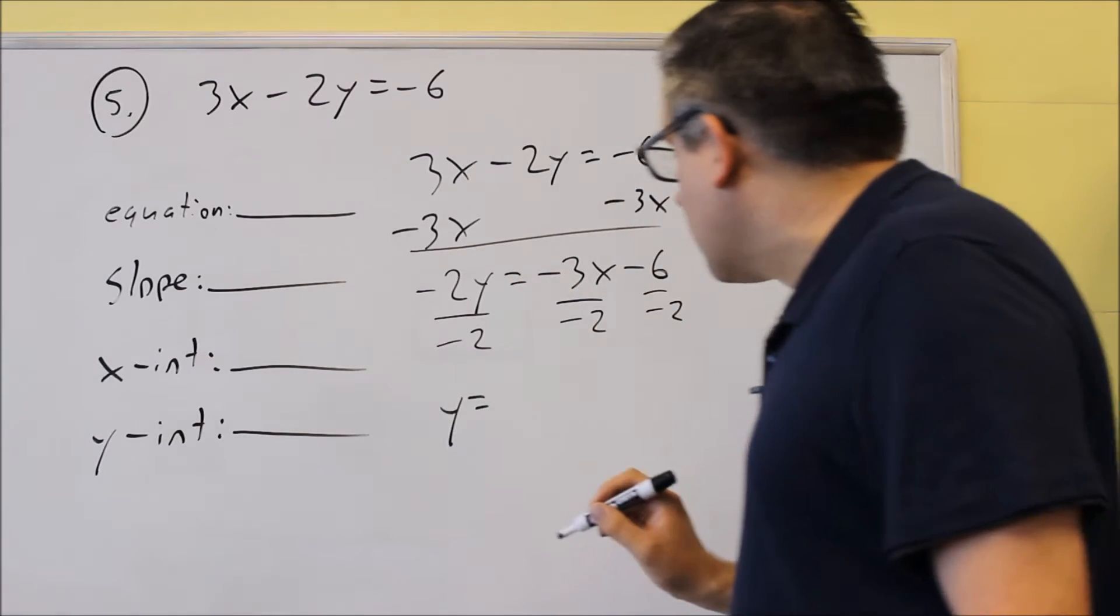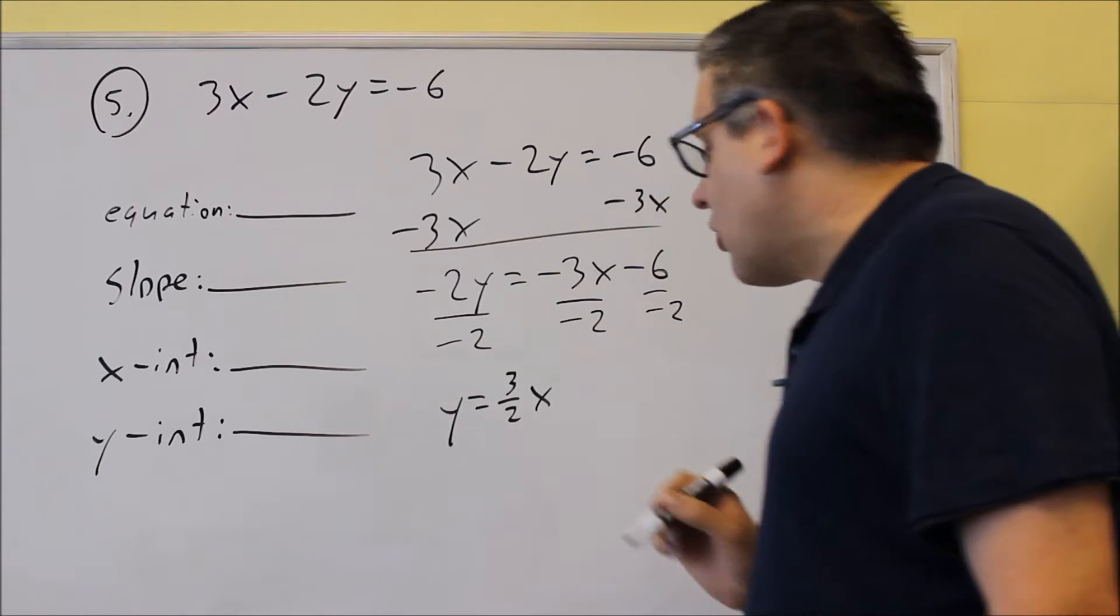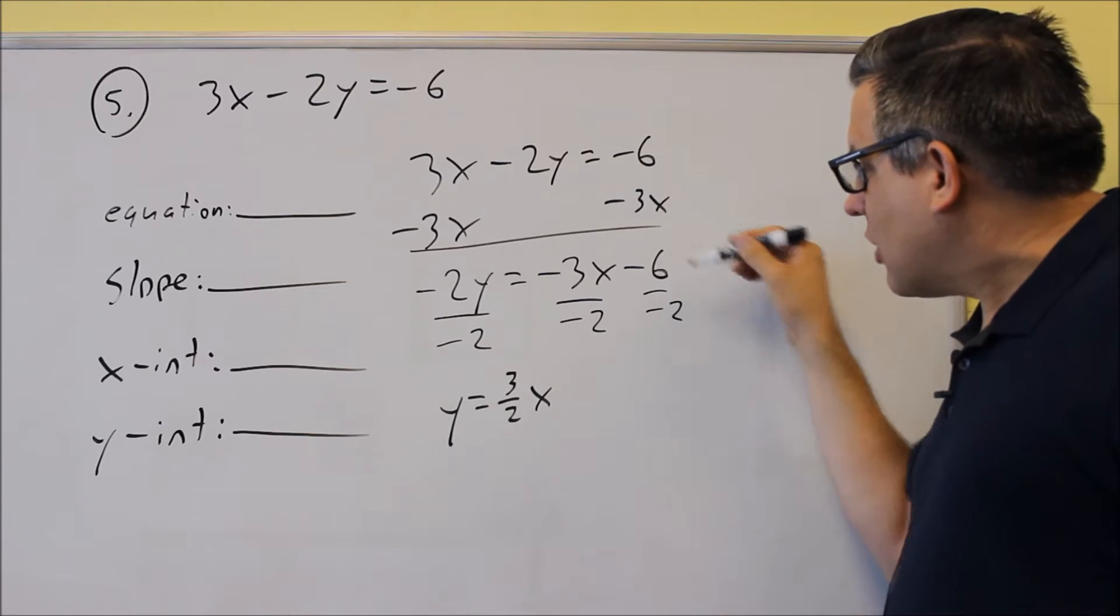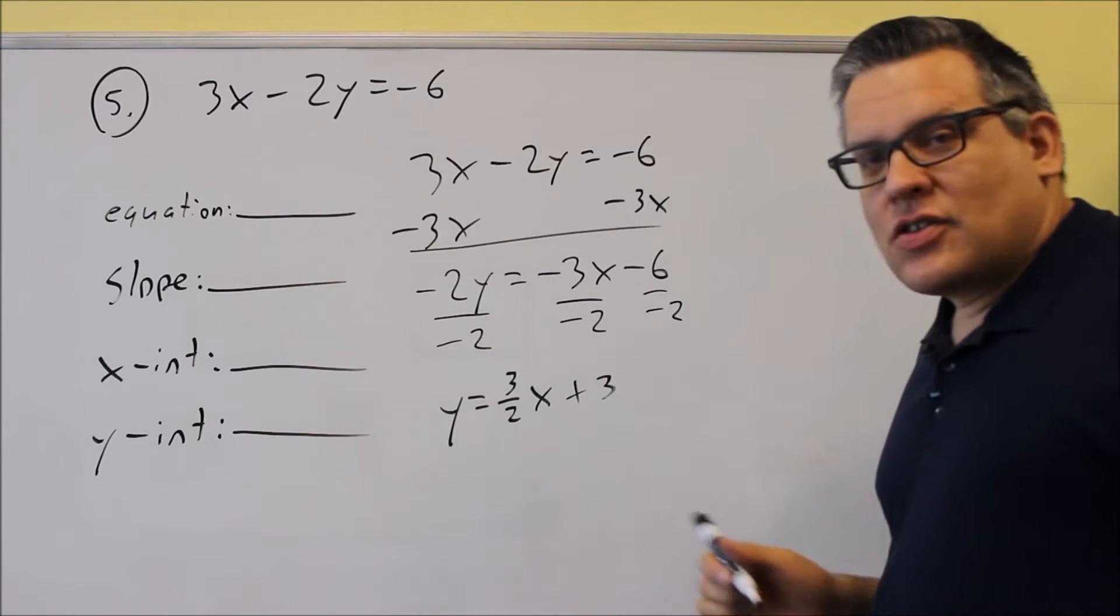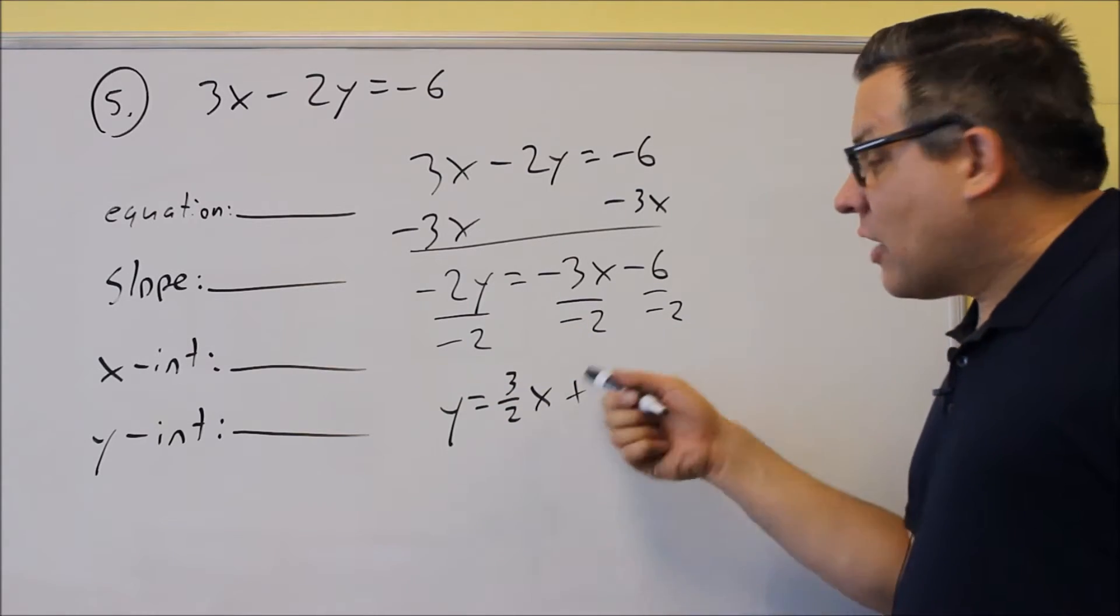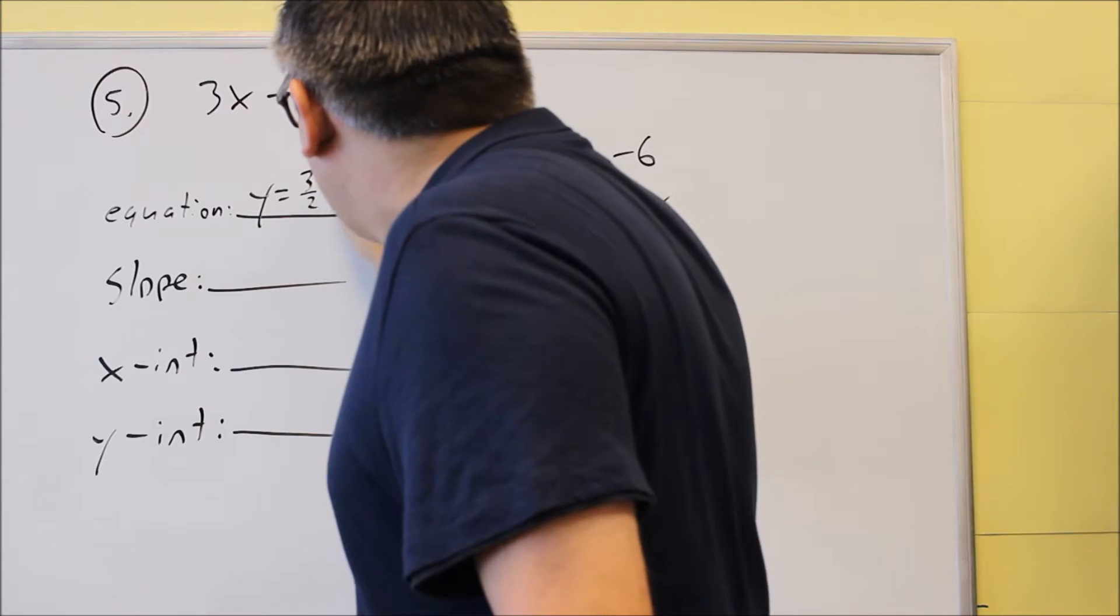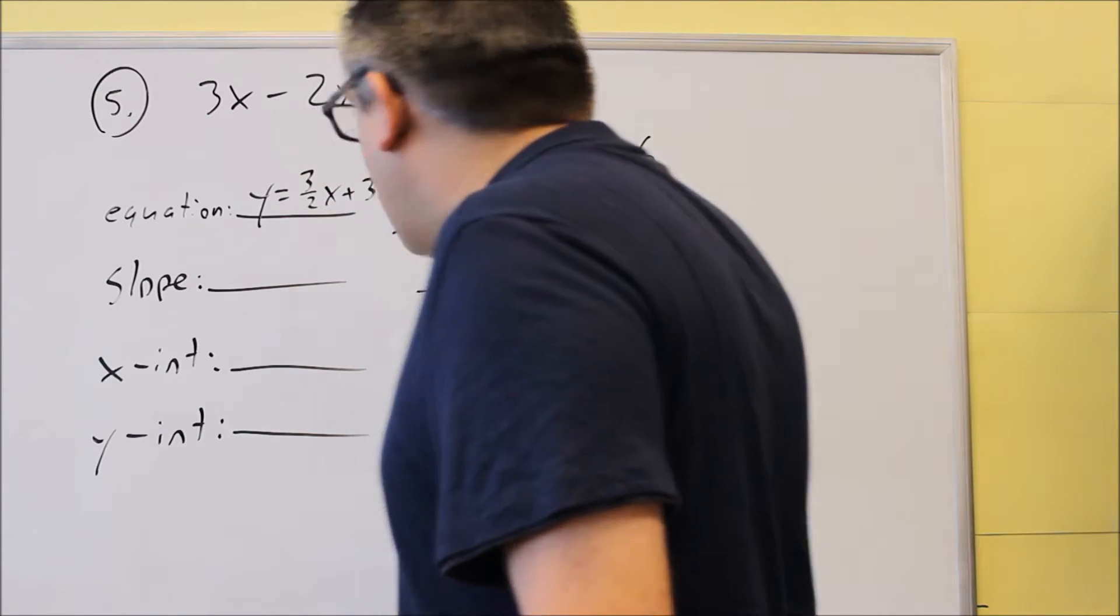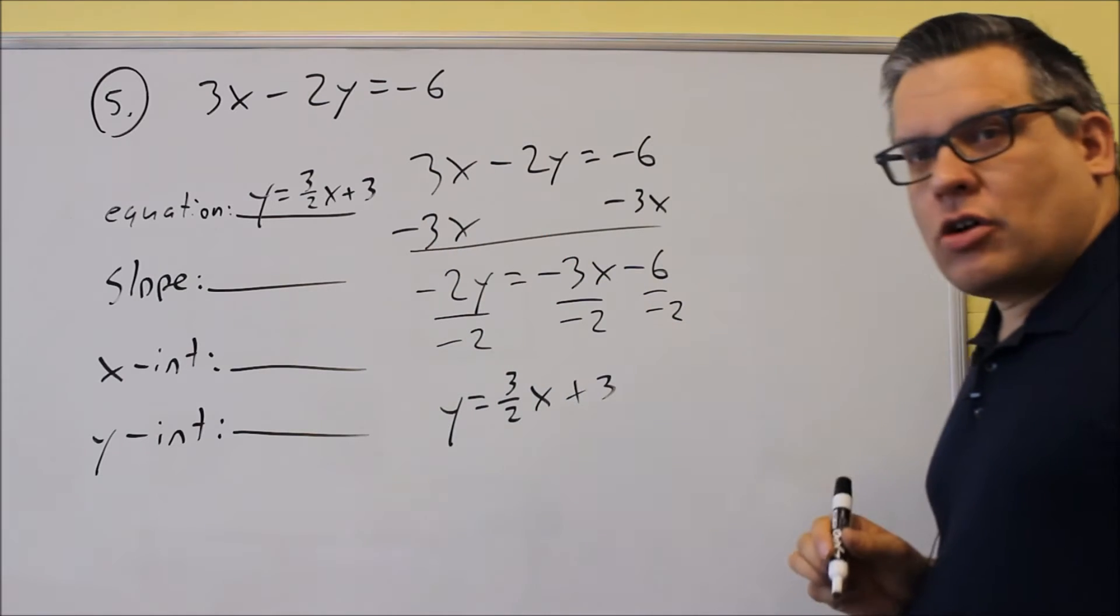And then we need to solve for y. So I want to divide everything by negative 2. So notice that all three terms are being divided by negative 2, because that's the number in front of the y. Okay, so I have y equals, I have negative over negative, it's going to give you a positive. So I have a 3 halves x, and then negative 6, negative 2 will give you a plus 3. So this is my final answer as far as slope-intercept form. This is 3 halves x plus 3. So that's the equation that they want, and that's the one that we're eventually going to graph.